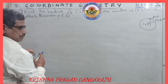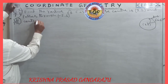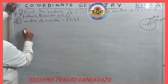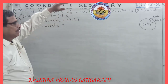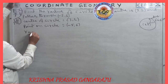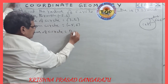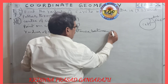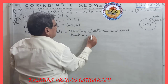Given data: center of circle = (3, 2); point on circle = (−5, 6). The radius of the circle is equal to the distance between the center and the point on the circle.